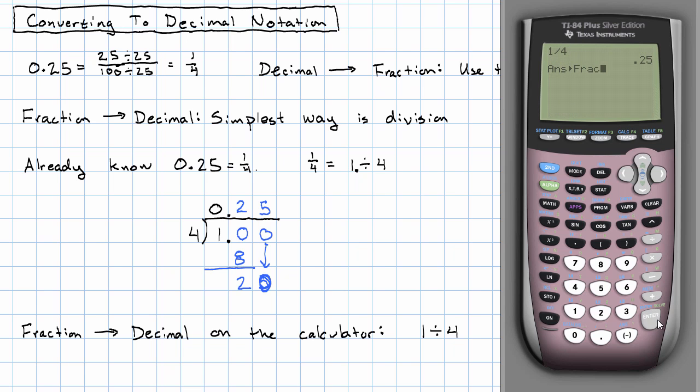Now, if it happens that we've converted that to a fraction. We've said 1 divided by 4. Convert it to a fraction, for example. And we want to get it to a decimal. The second option in the math menu says, I really want to give that as a decimal.